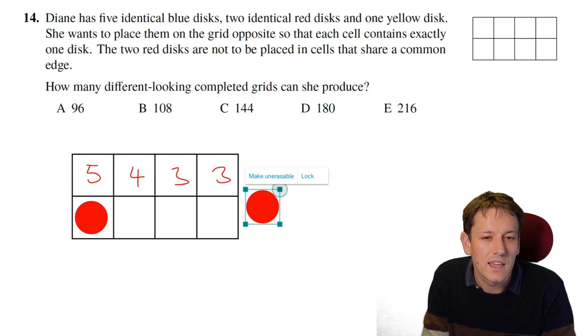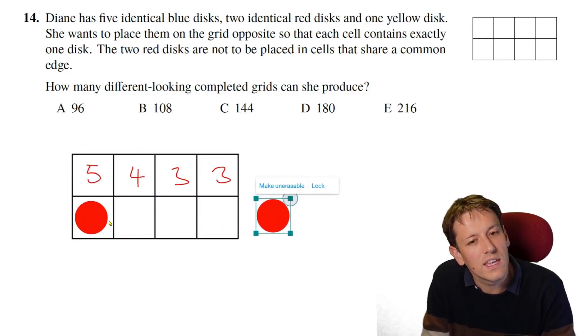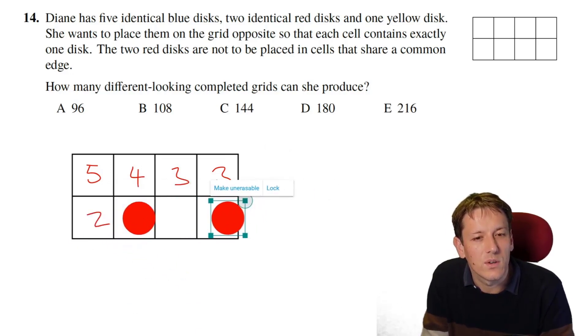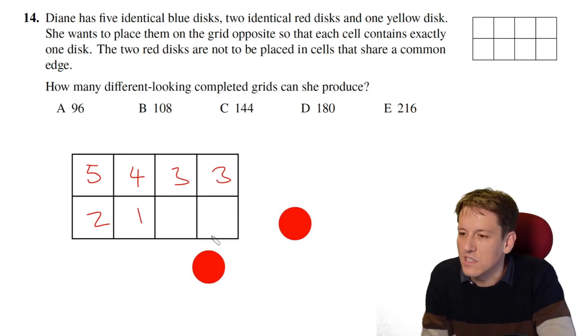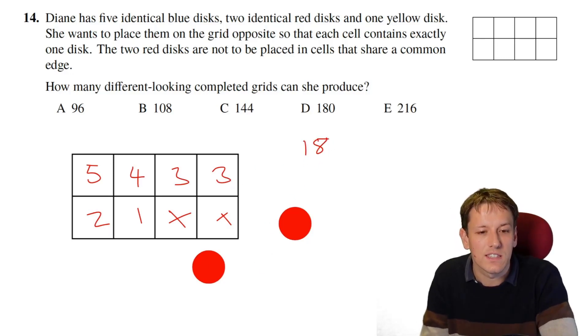And now if I put it here, again, I'm not considering any of the ones that I've already done before. It can't go here, but it could go here or here, so there would be 2. And if I put it here, there's only one left here, because I can't put it next to it. And then there's no way that uses these two without using one of the other ones. So there'd be 5, 9, 10, 11, 12, 13, 14, 15, 16, 17, 18 ways of positioning the red disks.